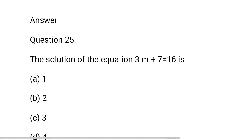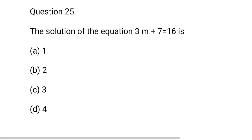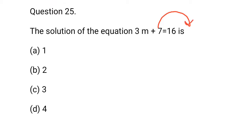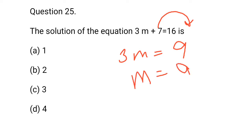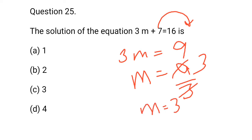Last question, number 25: The solution of the equation 3m plus 7 is equal to 16. So, 7 goes to RHS and is subtracted: 3m is equal to 16 minus 7, that is 9. So, m is equal to 9 upon 3, that is 3. m is equal to 3 is the correct answer. c option is correct. Students, stay connected for the recent updates. Thank you.